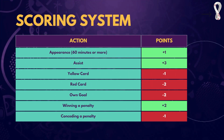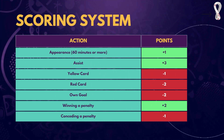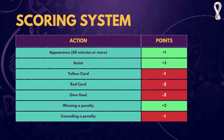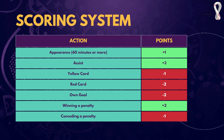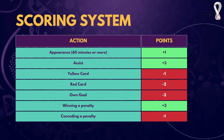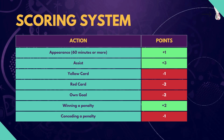Now let's talk about the scoring system, which is a little different from FPL or UCL fantasy. For an appearance of 60 minutes or more, it's 1 point — but the bare minimum has to be 60 minutes. For an assist it's 3 points, a yellow card is minus 1, a red card is minus 2, an own goal is minus 2. If a player wins a penalty it's plus 2, and if a player concedes a penalty it's minus 1.